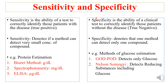The second attribute a method has is that of specificity. Specificity is the ability of a clinical test or procedure to correctly identify those patients without the disease — they are able to truly find out the true negative results, with no overlapping. Specificity denotes that one method can detect only one compound; the more specific the method, the better it is for the testing procedure.